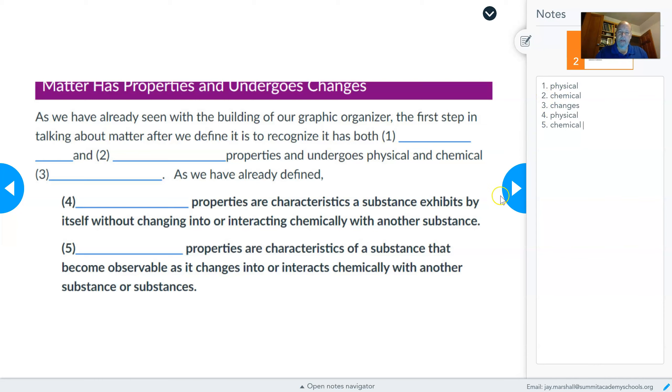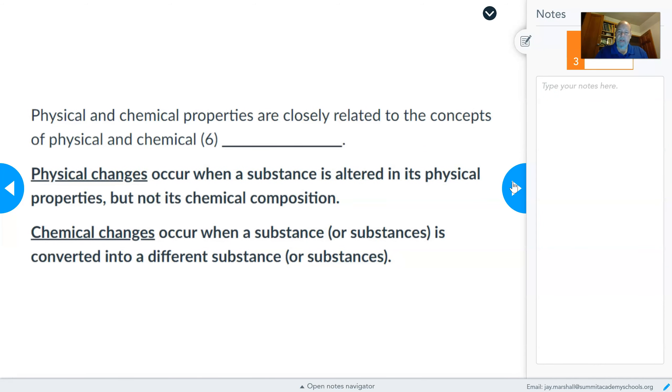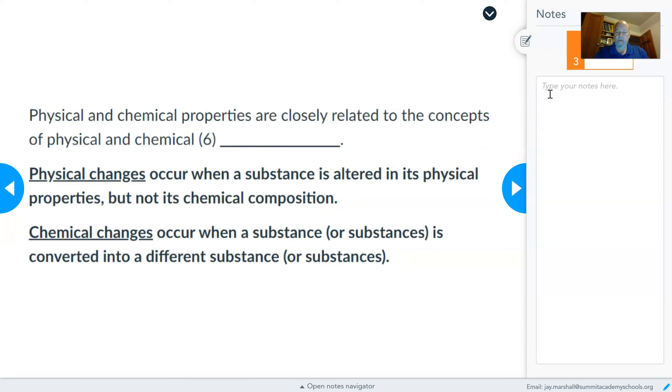So now we know that matter has properties, and it undergoes physical and chemical changes. We define physical changes as changes that occur when the substance is altered in its physical properties, but not its chemical composition. So if I change from a solid to a liquid, that's a change in a physical property because it's still water, it's still H2O. On the other hand, if I break the oxygen-hydrogen bonds in water molecules, I change the substance chemically from water to hydrogen and oxygen molecules.